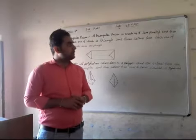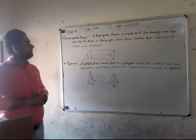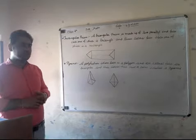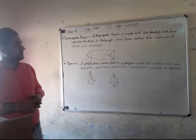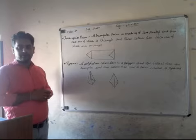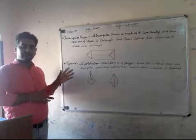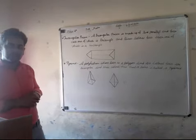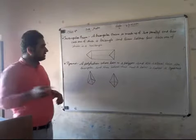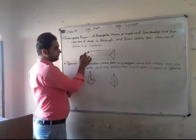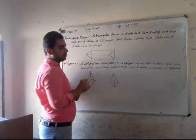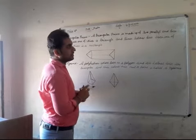A Triangular Prism is made up of two parallel faces, each one of which is a triangle. The starting face and the last face are both the triangle face — that is the triangular base at each end.